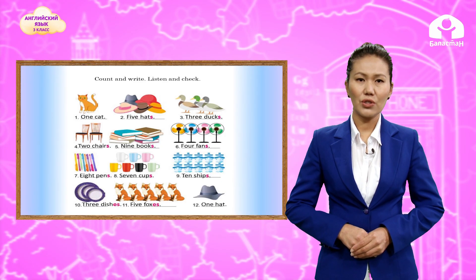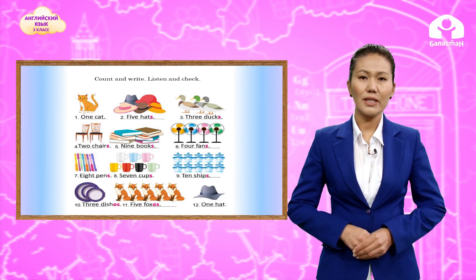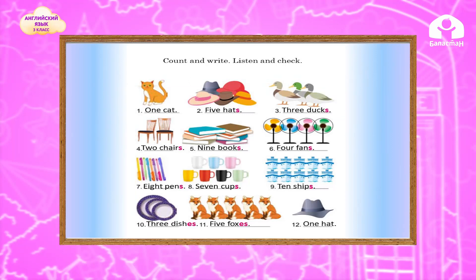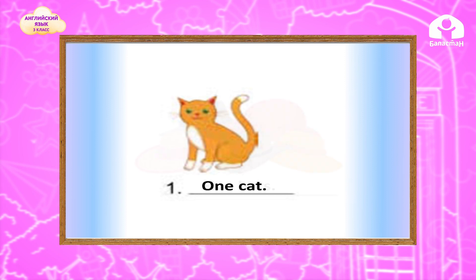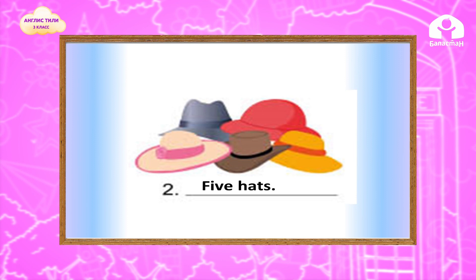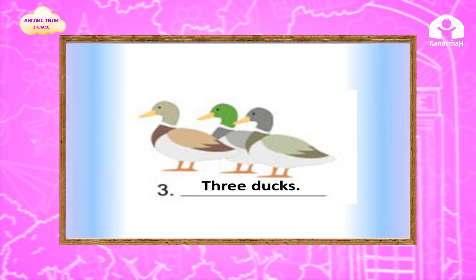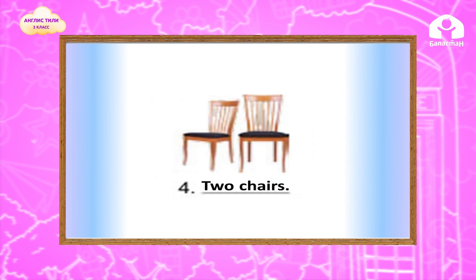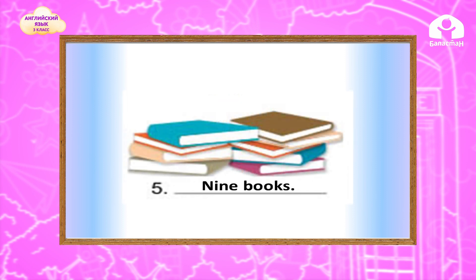Children, look at the picture. Let's count and write in your notebooks. Listen and check yourself. What do you see in the picture? One cat is singular. How many heads can you see? Let's count: one, two, three, four, five — yes, five heads. How many ducks can you see? Let's count: one, two, three — three ducks. How many chairs are there? Let's count: one, two — two chairs. How many books are there? Let's count: one, two, three, four, five, six, seven, eight, nine — there are nine books.